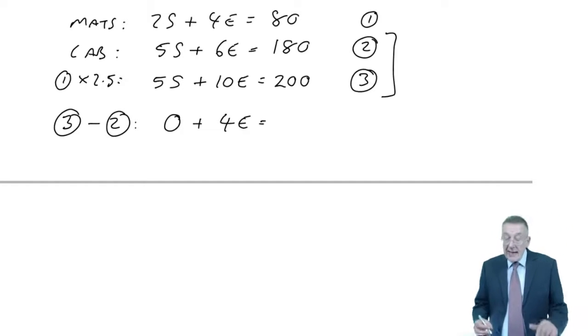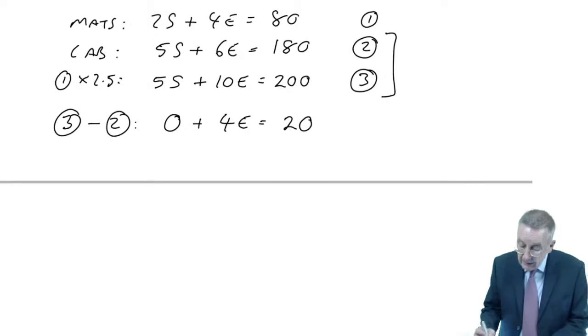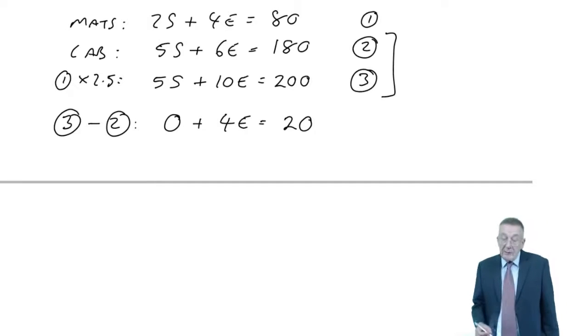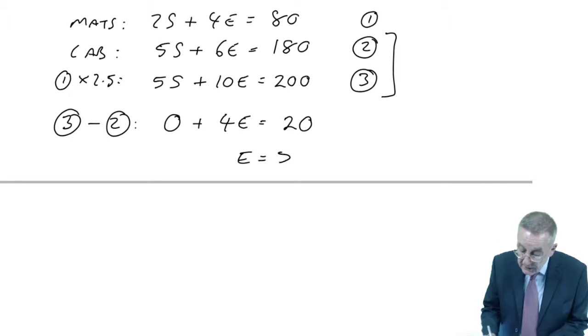And the reason I chose 2.5 is I've now got two equations which both have 5S in them. And so what I can do now is this.